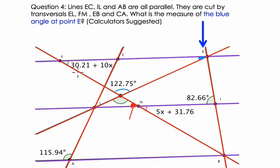So one thing I noticed as I'm working on this is that 5x plus 31.76 is vertical to this angle here, right? This angle, and this angle, if you look at the letters, it's F, M, L. So F, M, L. And those angles are equal.